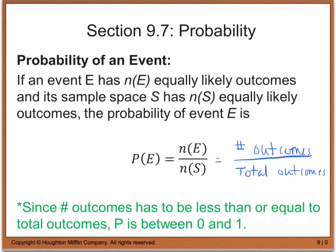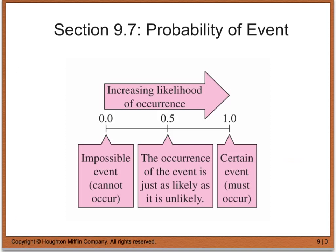Since the number of outcomes has to be less than or equal to the total number of outcomes, we know that our probability will always be between 0 and 1. If we get a probability of 0, that tells us that event is absolutely positively not going to happen because it is impossible. If I get a probability of 1, then this is definitely going to happen — it just has to occur. So as I go from 0 all the way up to 1, the closer I get to 1, the more likely an event is to occur; the closer I am to 0, the less likely that event is to occur.